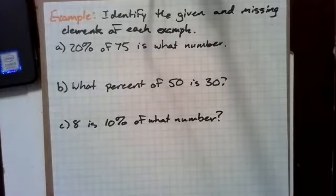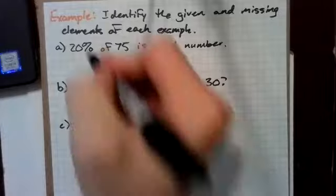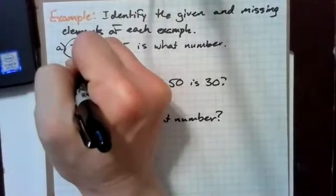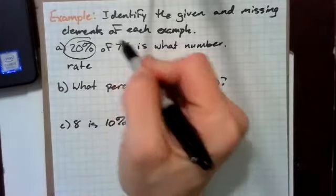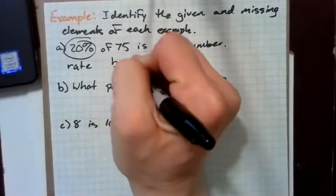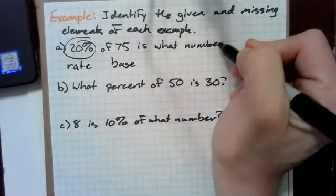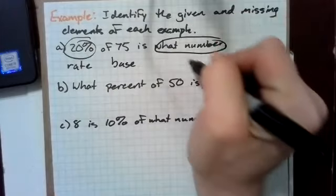So, 20% of 75 is what number? Well, we know right off the bat that 20% must be our rate. And since we have of 75, that has to be our base. So, the missing part is the portion.